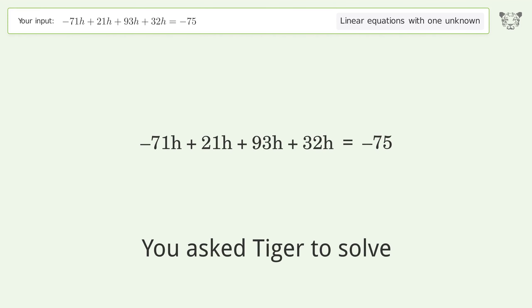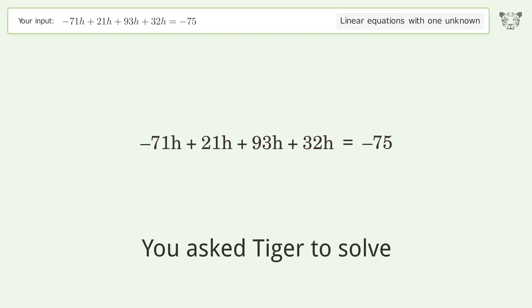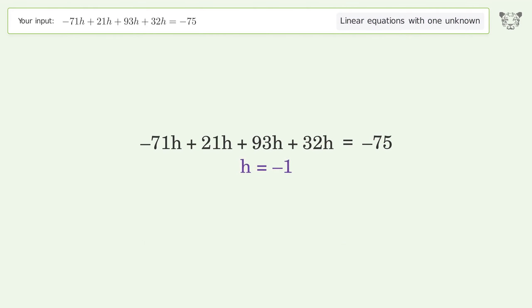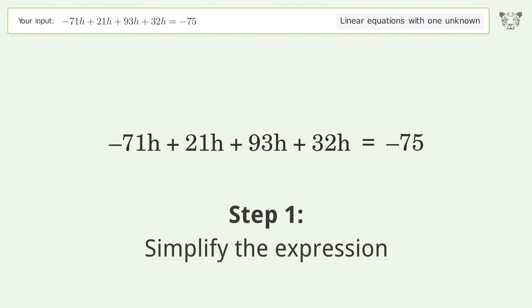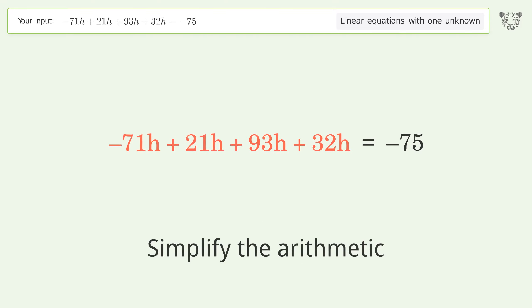We ask Tiger to solve this — it deals with linear equations with one unknown. The final result is h equals negative one. Let's solve it step by step: simplify the expression, simplify the arithmetic.